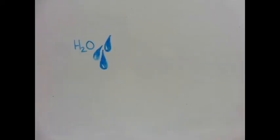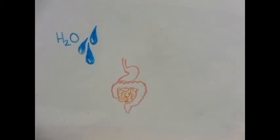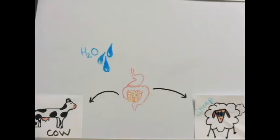Listeria monocytogenes is naturally present in the soil, water, and gastrointestinal tracts or digestive systems of ruminant animals like sheep, cows, and goats.